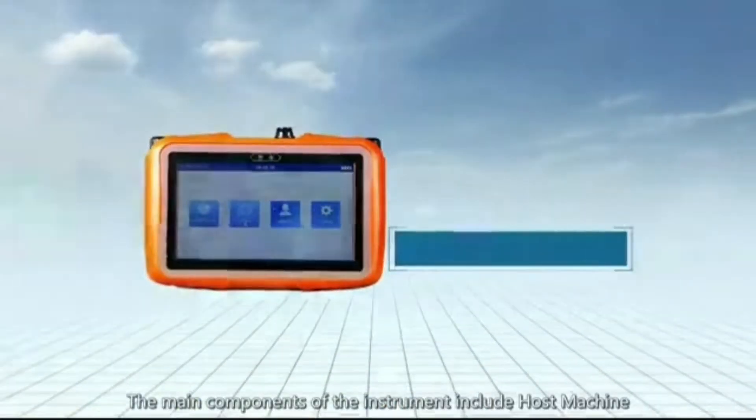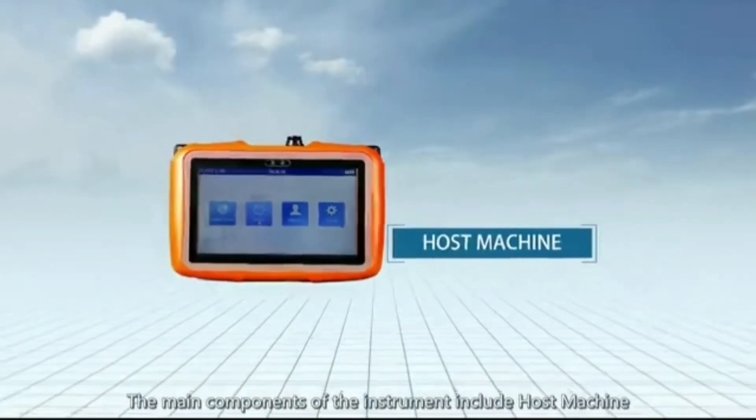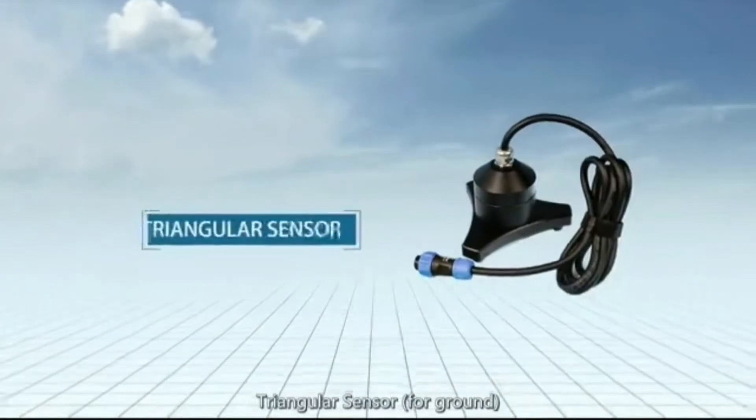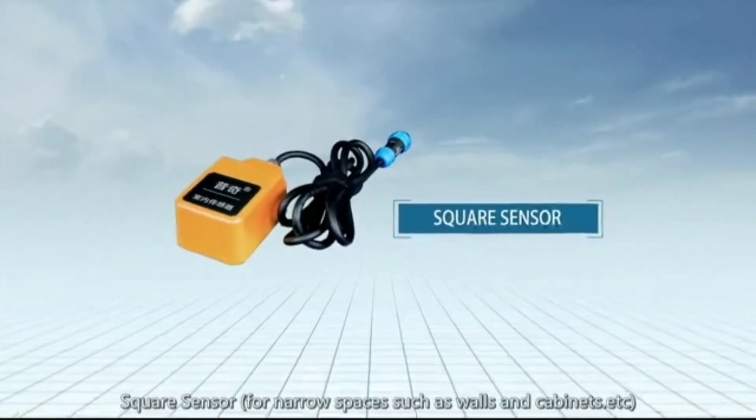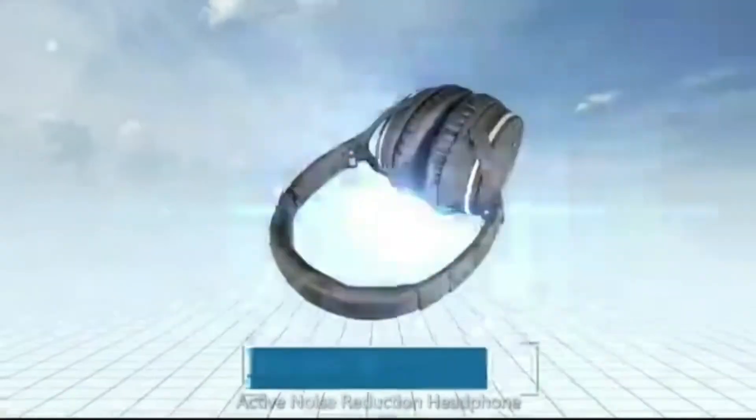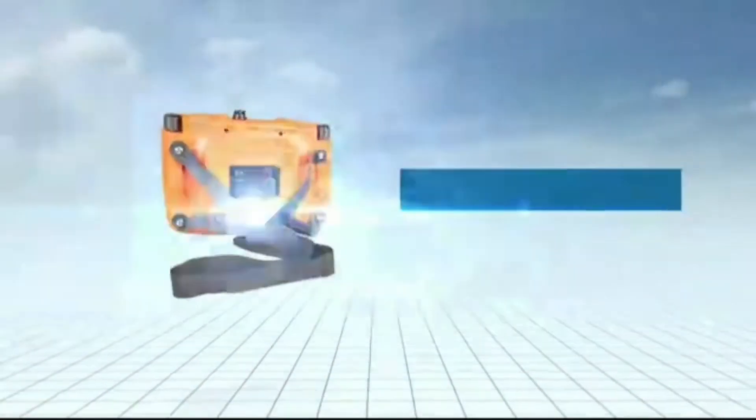The main components of the instrument include host machine, triangular sensor for ground, square sensor for narrow spaces such as walls and cabinets, active noise reduction headphone, and strap.